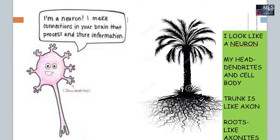This slide shows a similar structure which we see in our daily life. We are very familiar with coconut trees. Our neuron is very much similar to a coconut tree. Its head looks like the dendrites and cell body, the trunk looks like the axon of a neuron, and the roots of a coconut tree look like axon terminals.